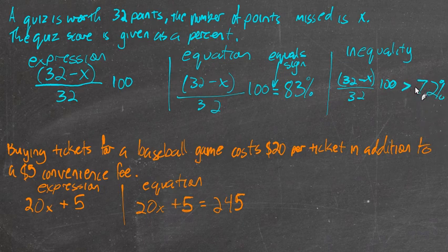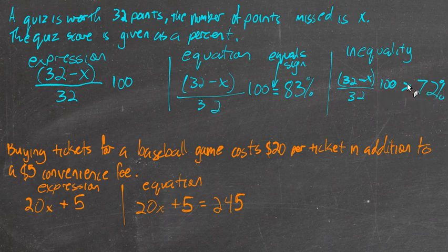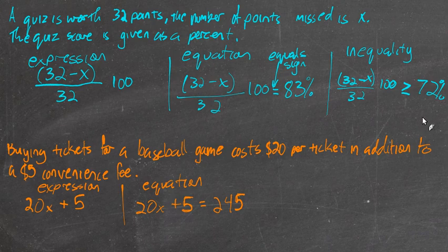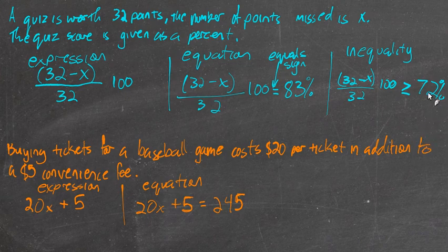that would represent maybe in order to pass the class, or get a B in the class, or get an A in the class, you have to, on this next quiz, get at least a 72%, get more than 72%. We might even say greater than or equal to. That's what that little mark there means. Your score, that would be this expression represents your score, is greater than or equal to 72%, in order to be safe and to get the score in the class that you want, you would need to get greater than or equal to 72% on the upcoming quiz. That's what that could represent.